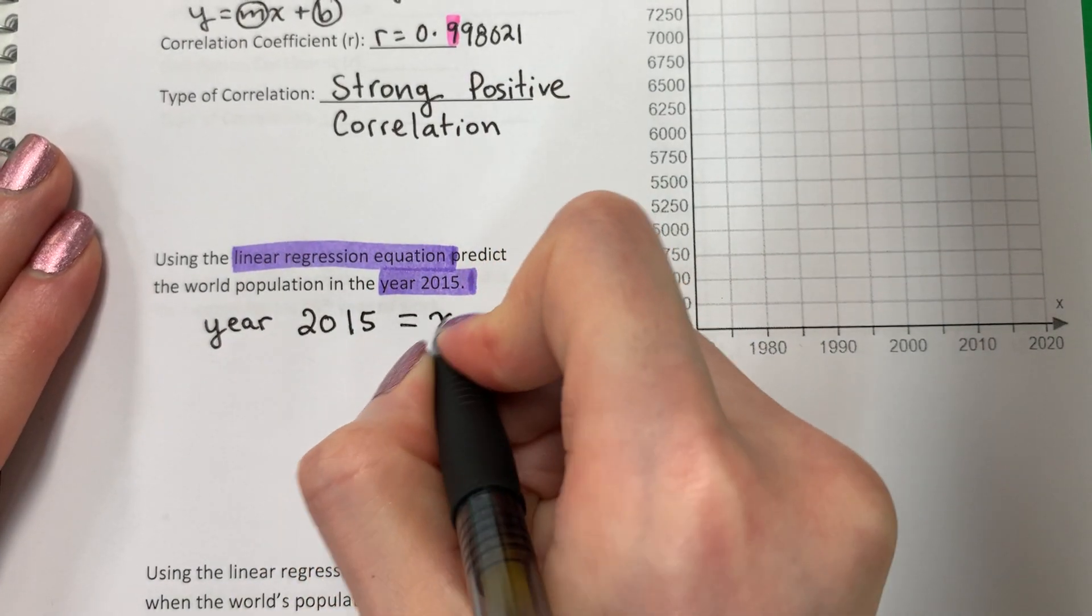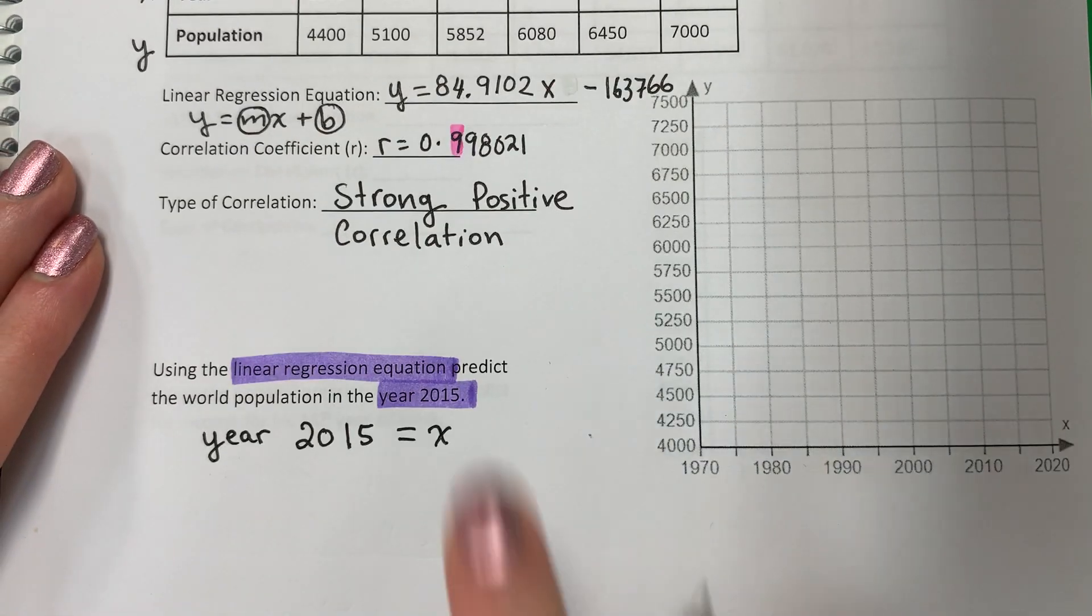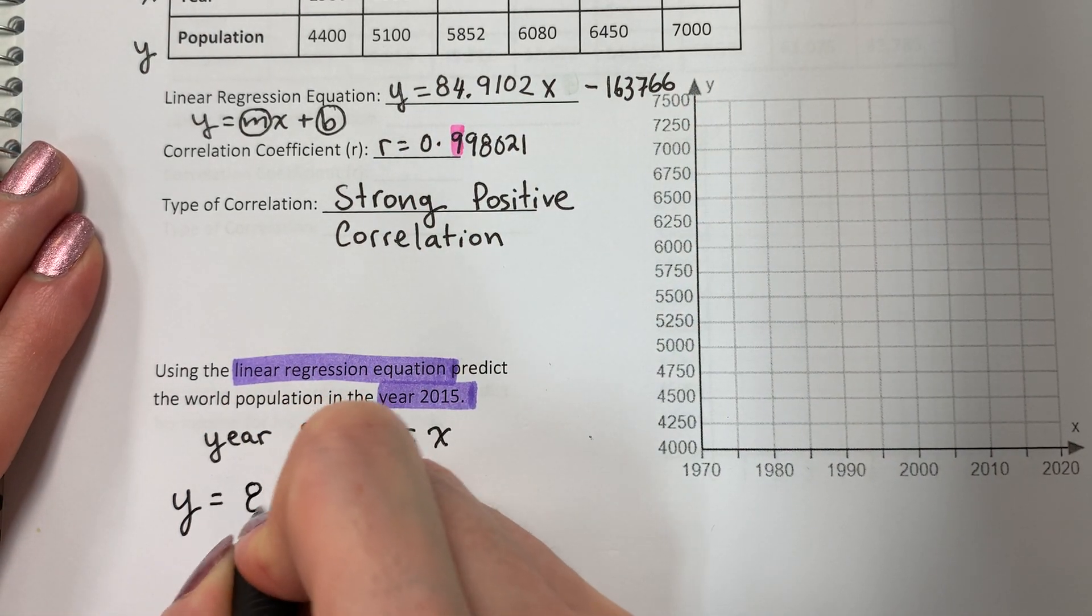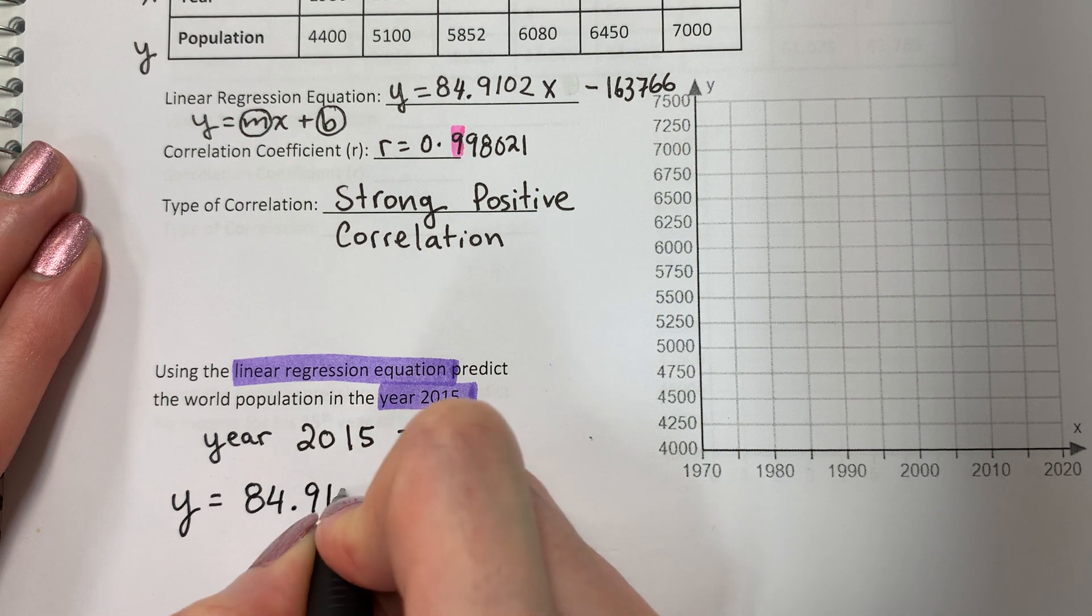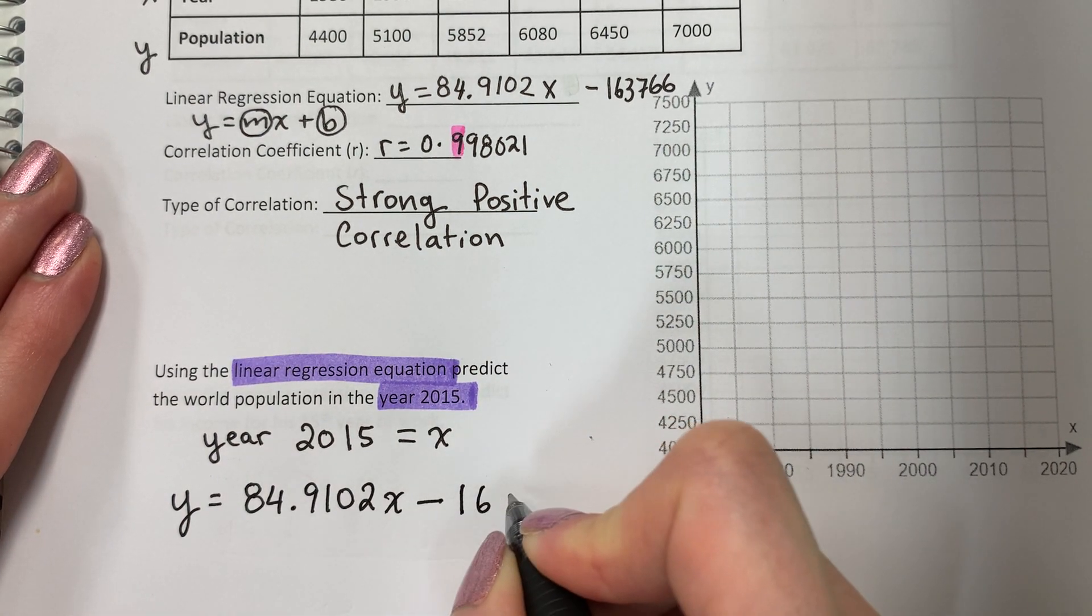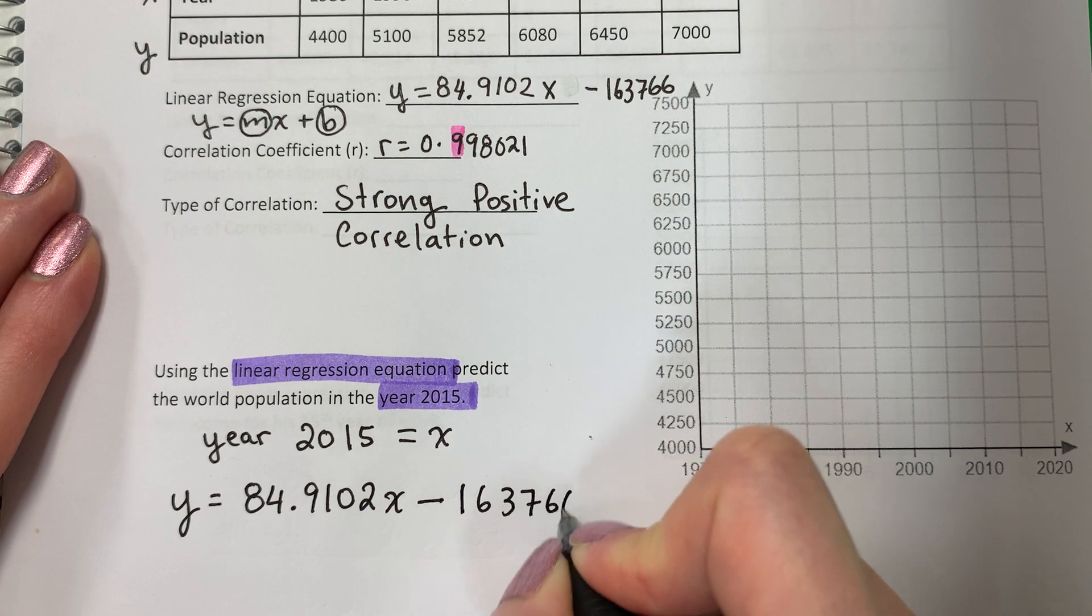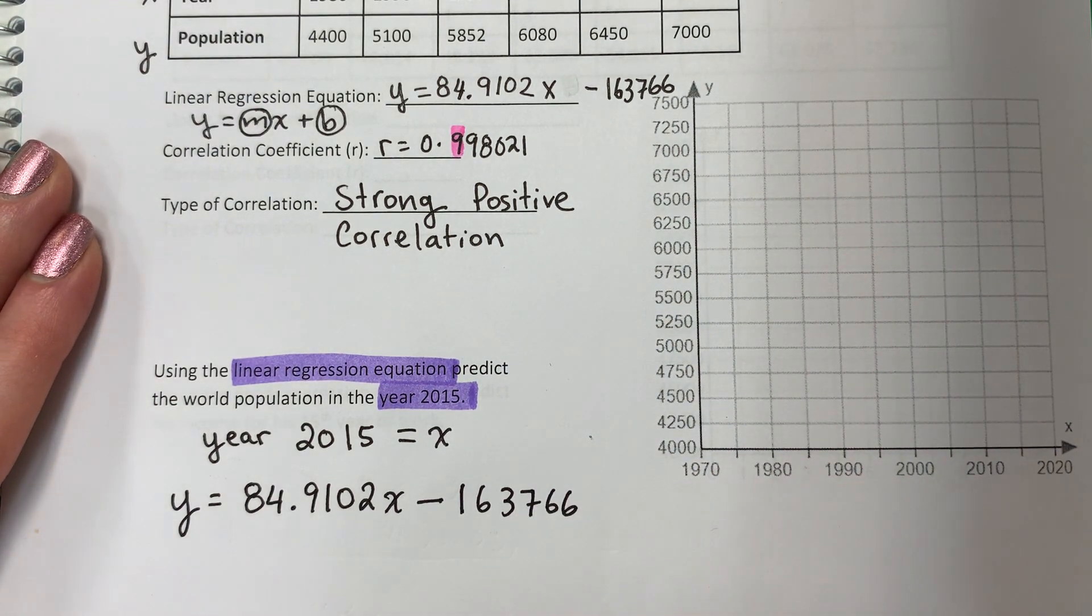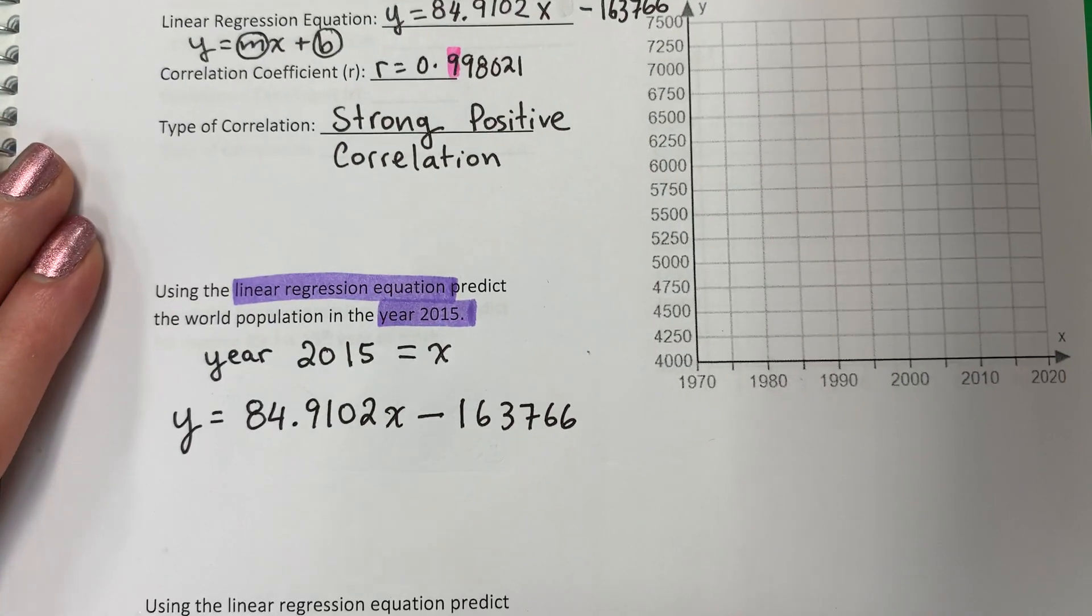So X is 2015. And my equation. Let's go ahead and copy that down. Y equals 84.9102, X minus this number. Let me see what number that is. 163,766.